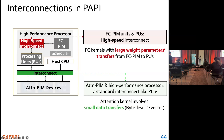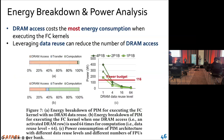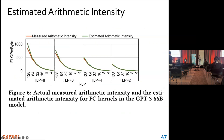Let me show you some results. With the equation, our estimated arithmetic intensity is very similar to the measured arithmetic intensity. Only when TLP and RLP are very large do we have a gap, but that doesn't influence our results — when parallelism levels are very large, the kernels should be compute-bound anyway, so it's not a problem.